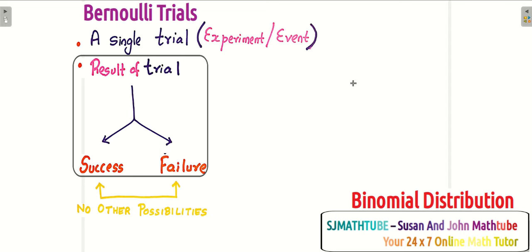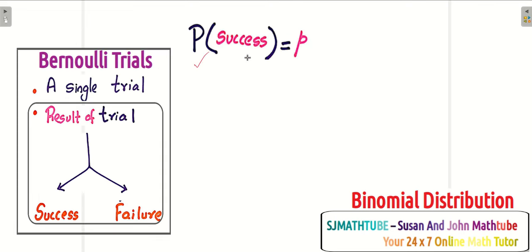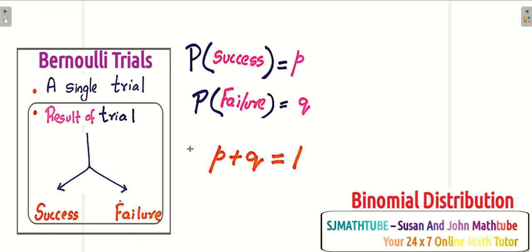I will give you an example. Imagine you are tossing a coin. In standard conditions, when you toss a coin, there are only two possibilities — success or failure. In my experiment, I can call getting a head as success. In someone else's experiment, getting a tail might be a success. So remember, the result of the trial will be either a success or a failure, and they are just labelled as such. These are mutually exclusive outcomes.